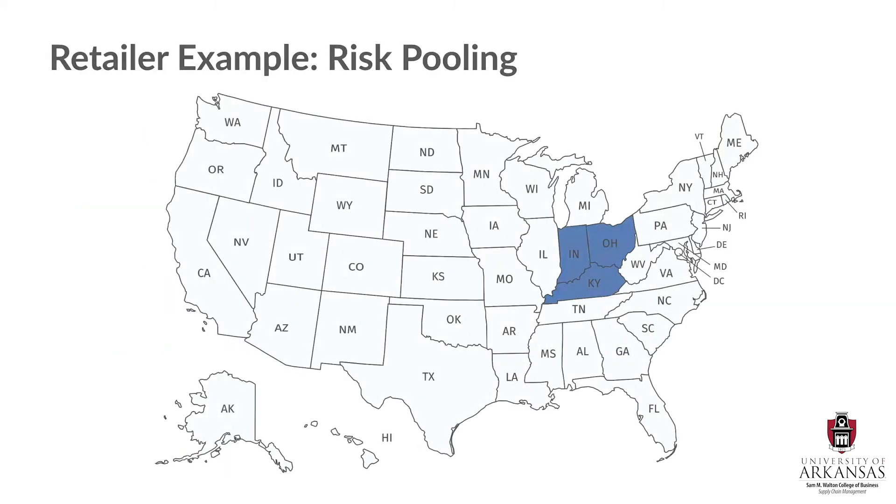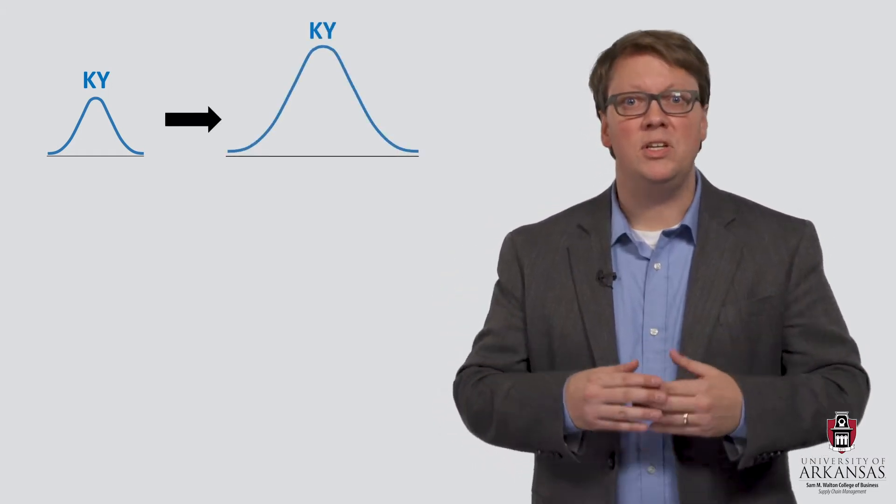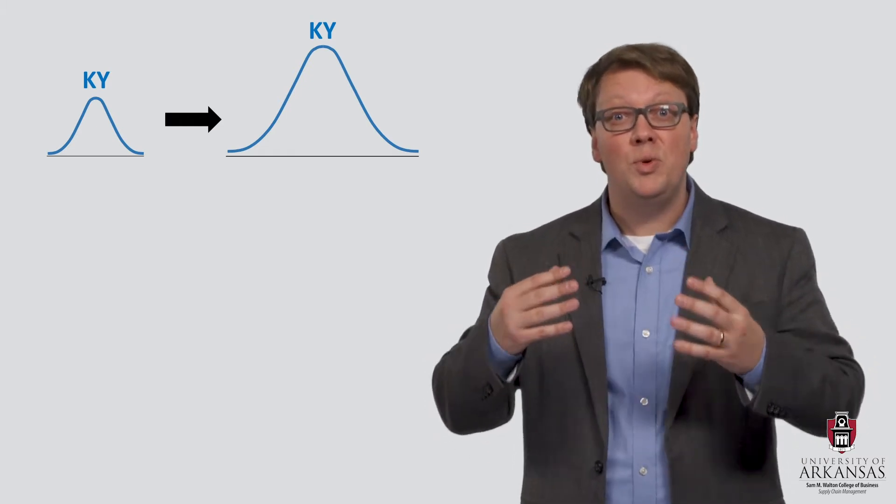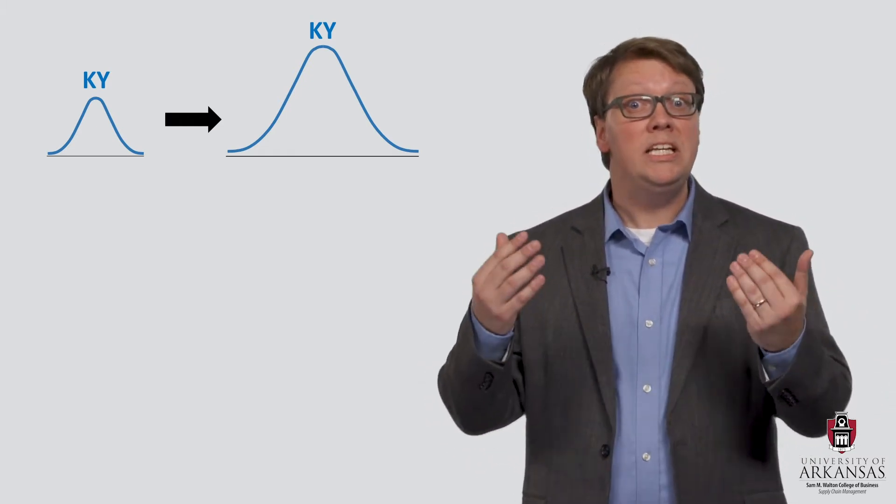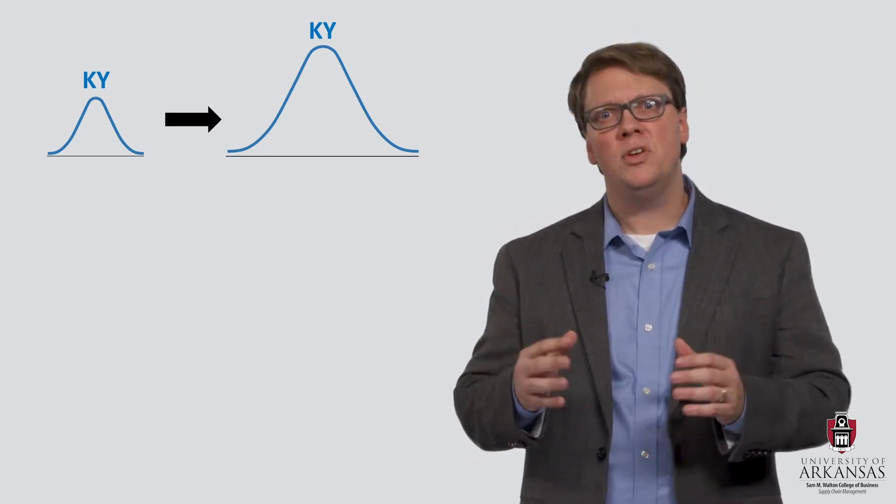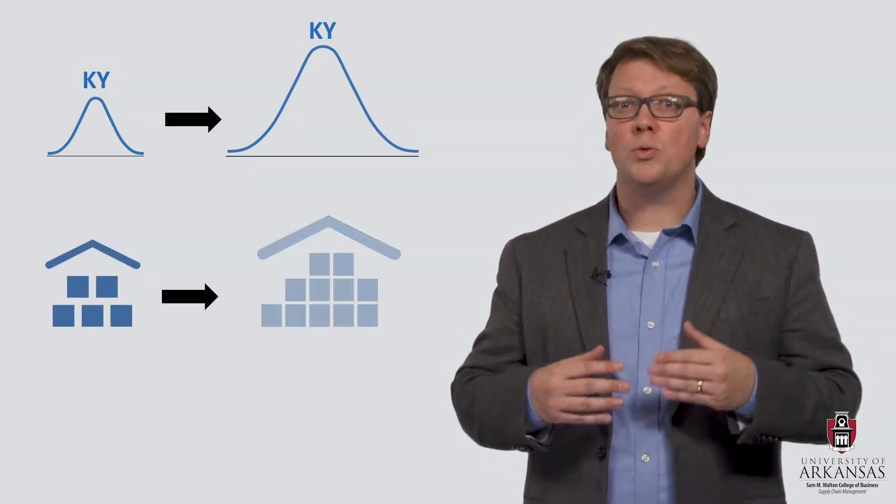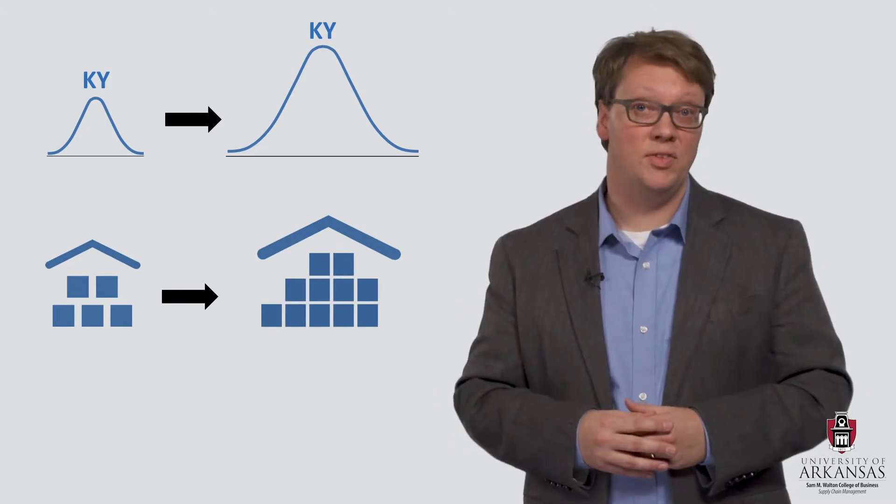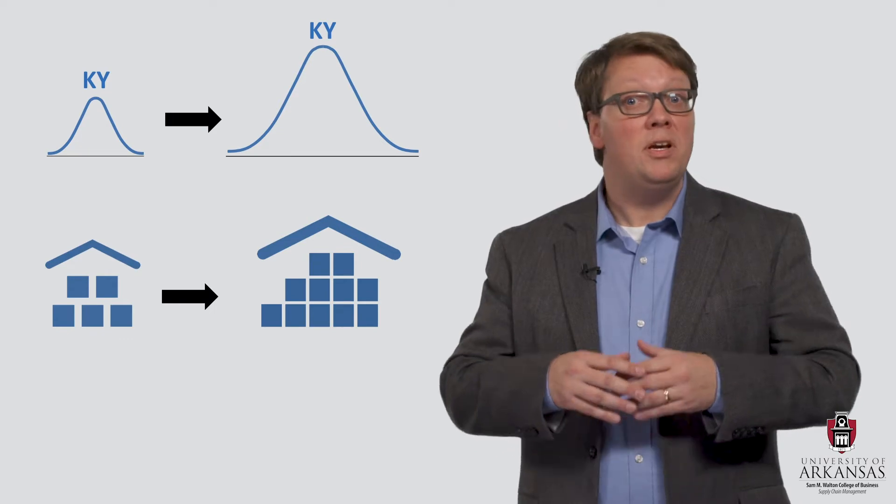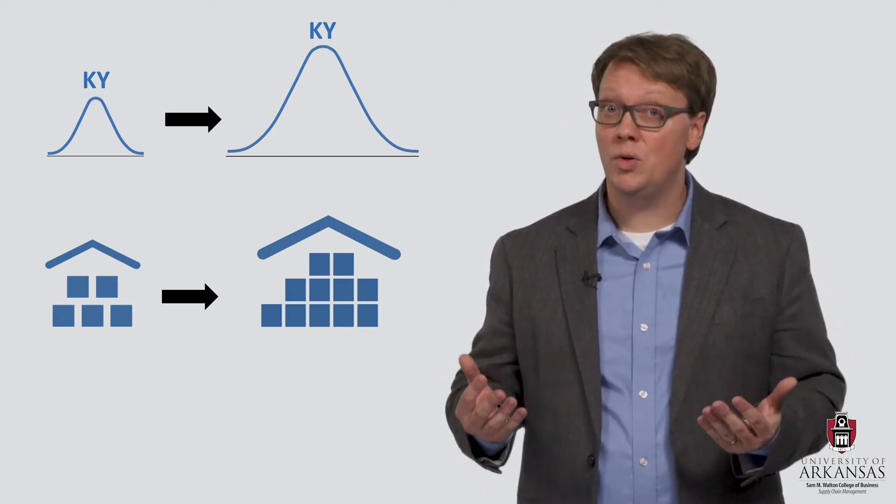Let's return to our example. Let's imagine the retailer centralizes its distribution system by consolidating all DC operations in a single DC in, say, Kentucky. Previously, Kentucky served a rather small market area. With the increase in the size of its market, the total volume, and importantly, the degree of lead time demand uncertainty, will increase as well. In other words, the Kentucky DC will need to hold more safety stock after DC centralization than it did before, because it is now also serving stores in Ohio and Indiana.